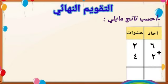ننتقل صغاري للتقويم النهائي. احسب ناتج ما يلي. التمرين الأول: ستة وعشرون زائد اثنان وأربعون. أولاً نجمع الآحاد مع الآحاد: ستة مع اثنان يصبح ثمانية.